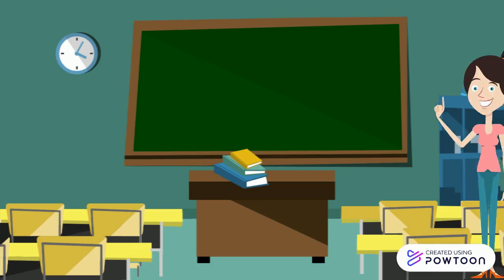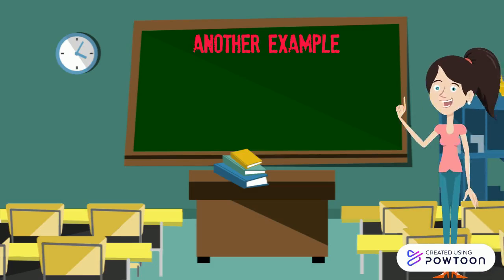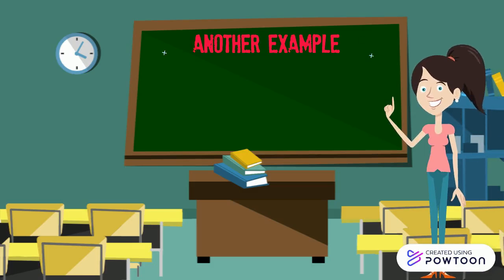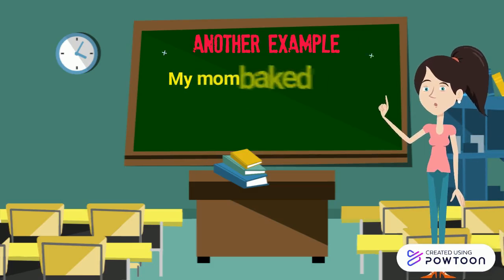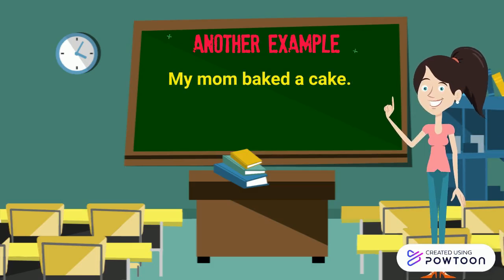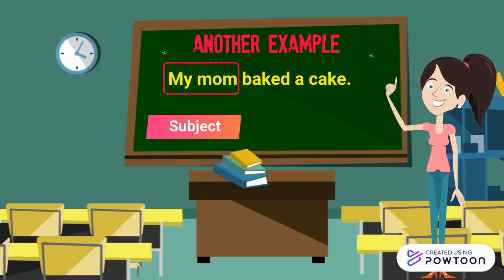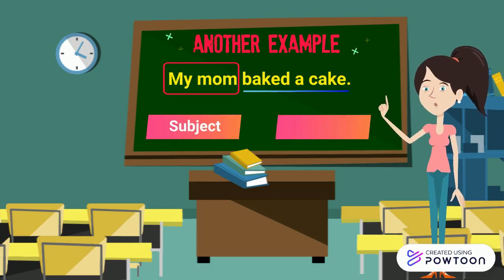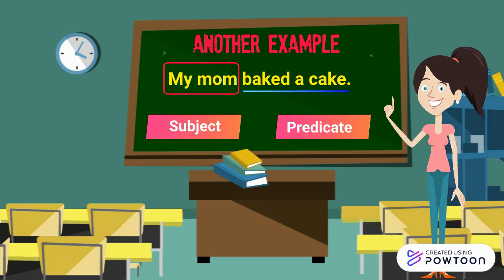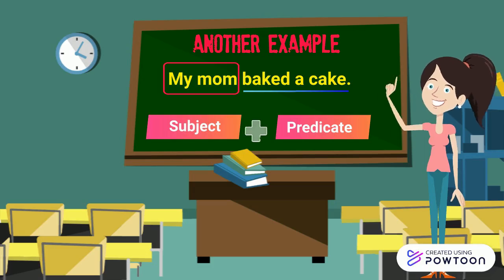Let's make another simple sentence: "My mom baked a cake." My mom is the subject and baked a cake is the predicate. Together, they form a simple sentence.